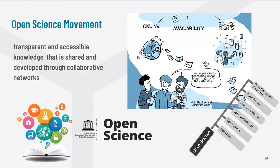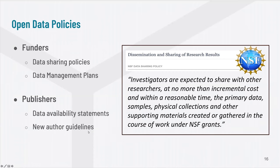There is a growing movement around opening up science and opening up scientific results. Everybody is familiar with open access questions for published scientific articles. But the open science movement also focuses on making data, software, and methodologies more openly available in order to make science more transparent and accessible. Policies have increasingly been put in place by funders and publishers to encourage the sharing of data and other resources. As an example, here I'm showing an excerpt from the U.S. National Science Foundation data sharing policy.